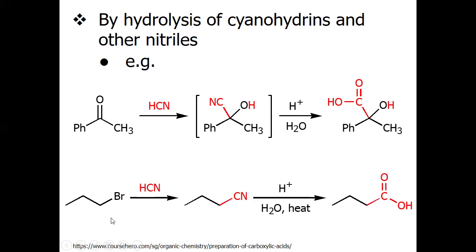Similarly, an alkyl halide can also be reacted with HCN to give you the nitrile. The name of this compound is butanenitrile, which upon acidic workup ultimately gives the carboxylic acid. The detailed mechanism has already been explained in reactions of aldehydes and ketones, Part B.